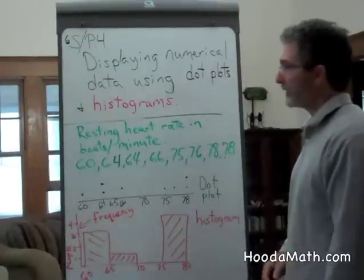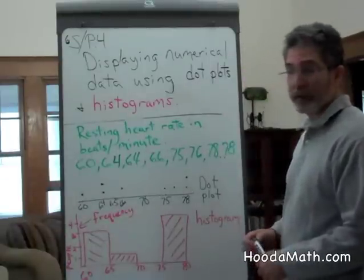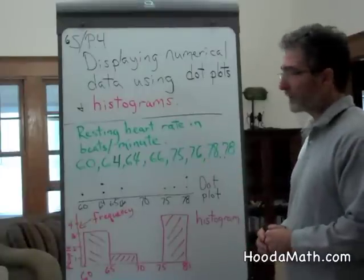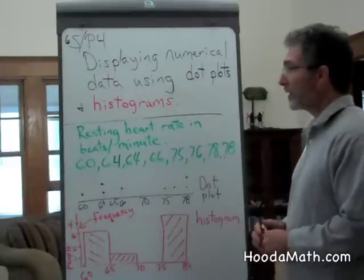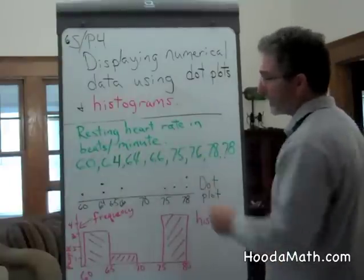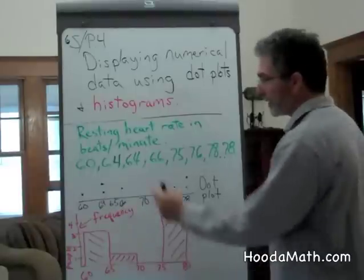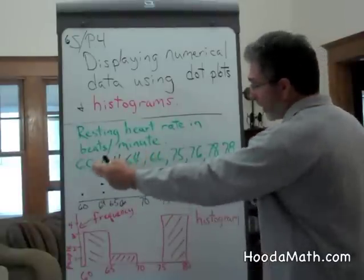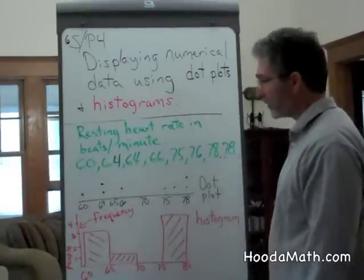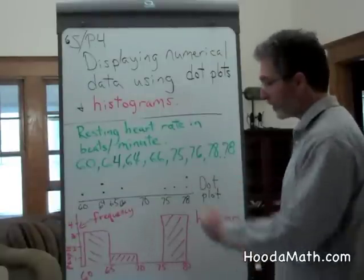We're going to display numerical data using dot plots and histograms, showing two different kinds of displays using the same data — which is the resting heart rate in beats per minute. The numbers are already in order, so it's easy to put them onto the various graphs.